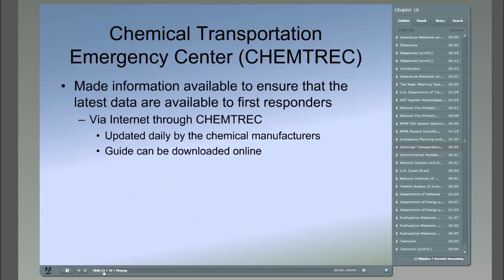In some cases, even the material safety data sheets will not provide the emergency responder with enough specific information on a chemical or compound during an emergency situation. The Chemical Manufacturers Association has made information available to ensure the latest data is available to first responders. One method of obtaining this information is via the internet through the Chemical Transportation Emergency Center, or ChemTrack. The Chemical Manufacturers Association also announced the creation of an online database system updated daily by the chemical manufacturers. Using the MSDS as a starting point, first responders can access the system via the internet to obtain the most up-to-date, accurate information. The guide to ChemTrack for emergency responders can be downloaded online at www.chemtrack.com.